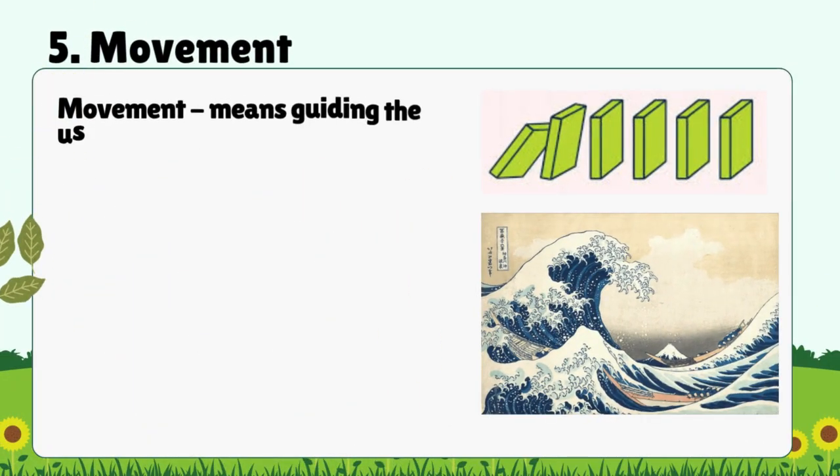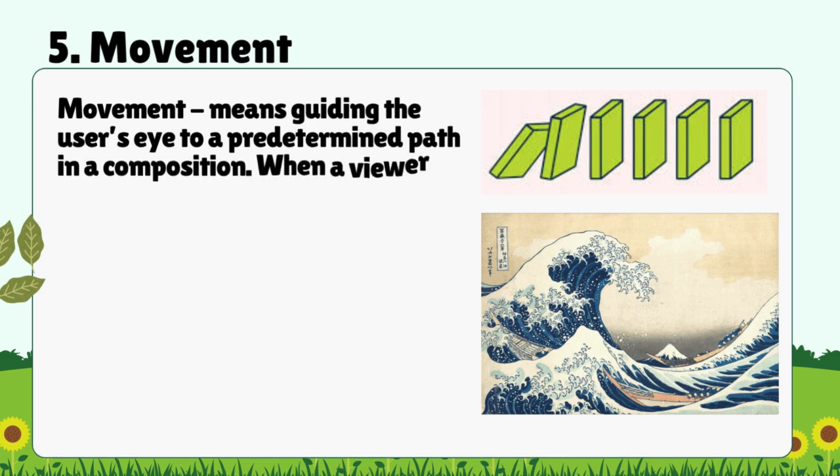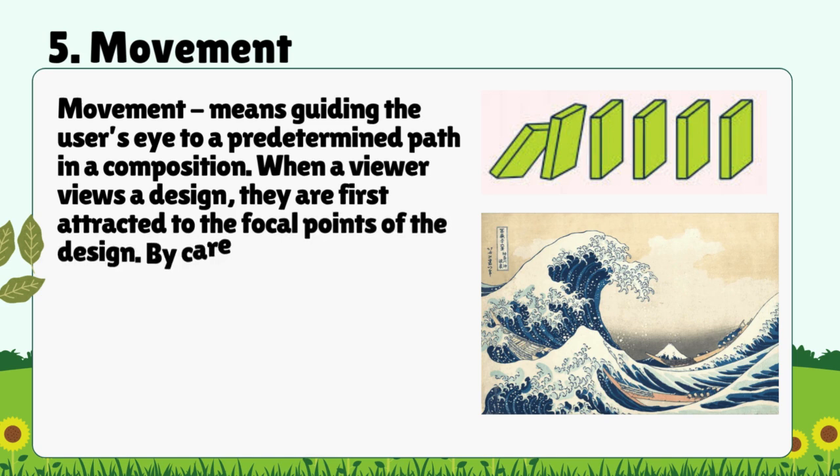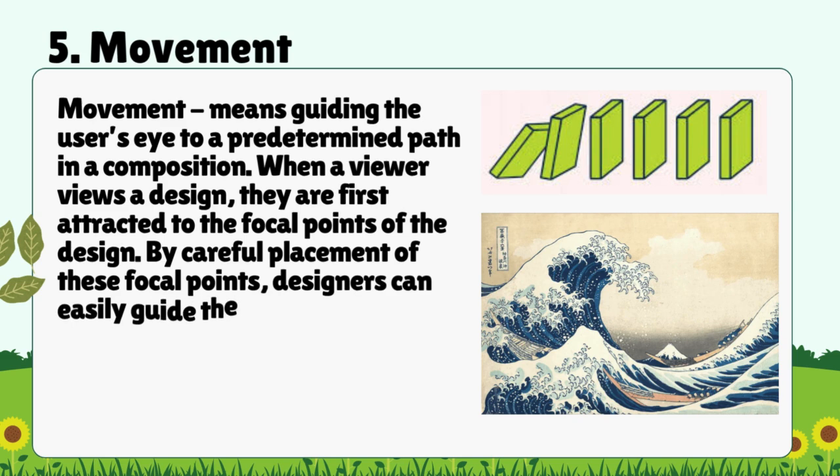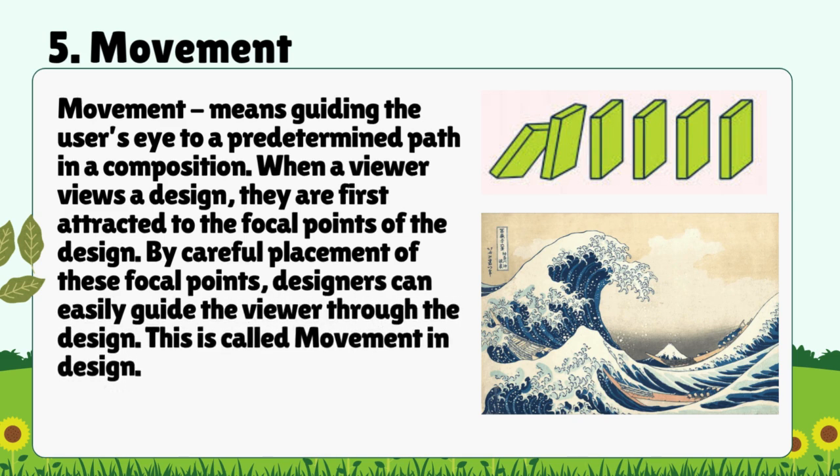5. Movement: Movement means guiding the user's eye to a predetermined path in a composition. When a viewer views a design, they are first attracted to the focal points of the design. By careful placement of these focal points, designers can easily guide the viewer through the design. This is called movement in design.